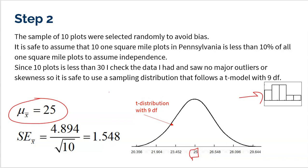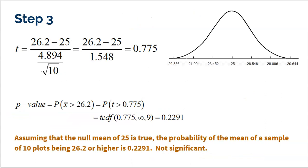The standard error is the standard deviation 4.894 divided by the square root of 10, giving 1.548. The sampling distribution is centered at 25 with standard errors marked. Our sample mean of 26.2 is already visually not much higher than 25. To find the t-score: 26.2 minus 25 divided by 1.548 equals 0.775. This puts our sample just 0.775 standard errors above the mean — not unusually high. So I already realize this is not significant at all.